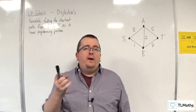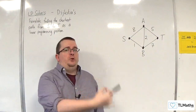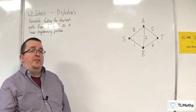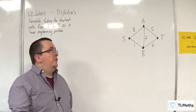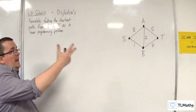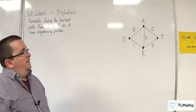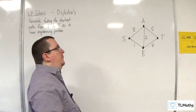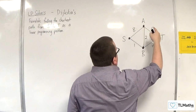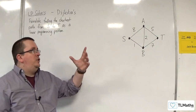Dijkstra's algorithm finds the shortest path from one point to another in a network. Let's say we wanted to find the shortest path from S to T. We would be able to do that by eye — we wouldn't even need to use Dijkstra's algorithm. The shortest path would be S, B, A, T. In doing that, I have used the edges S,B; B,A; and A,T.